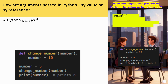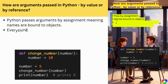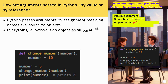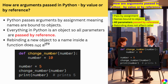How are arguments passed in Python — by value or by reference? Python passes arguments by assignment, meaning names are bound to objects. Everything in Python is an object, so all parameters are passed by reference. Rebinding a new object to a name inside a function does not affect the caller.